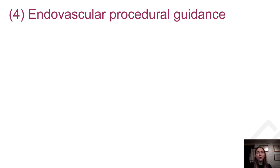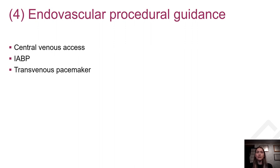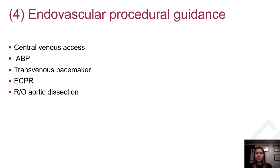The last and fourth role of TEE is for endovascular procedural guidance. TEE is commonly used to confirm venous position of guide wires when inserting central venous catheters and to guide positioning of intra-aortic balloon pump. TEE has also been successfully used at the bedside as an alternative to fluoroscopy for emergent placement of temporary transvenous pacemaker, and is essential during ongoing chest compression to guide venous and arterial cannula placement for initiation of ECPR. TEE also facilitates careful examination of the thoracic aorta to rule out aortic dissection.